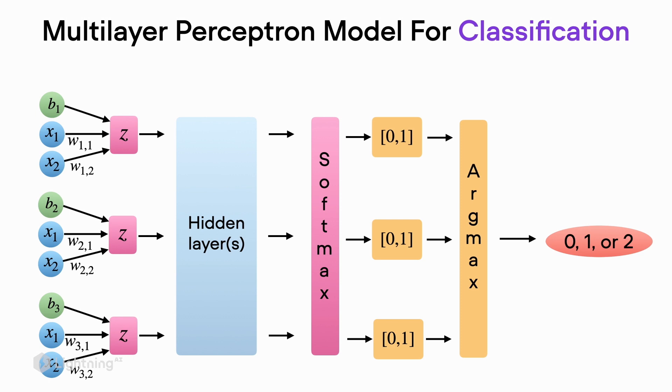So how do we actually have to modify our multilayer perceptron architecture so that it works for regression instead of classification problems? Here, just to briefly recap, is again the multilayer perceptron architecture for classification.